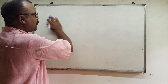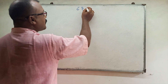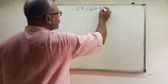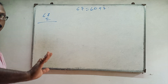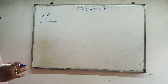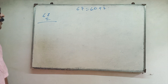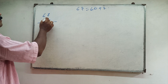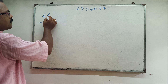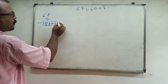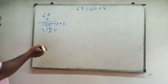This is the 67 table. That is 60 plus 7. So 67 ones are 67. 67 twos: 120 plus 14, so 134.